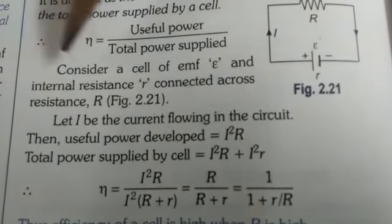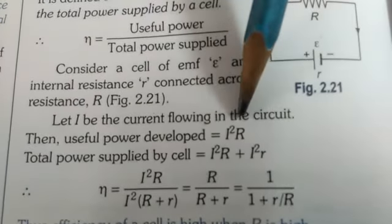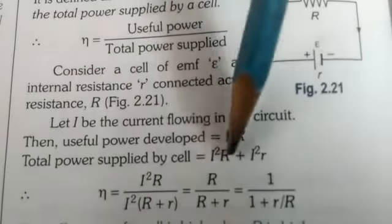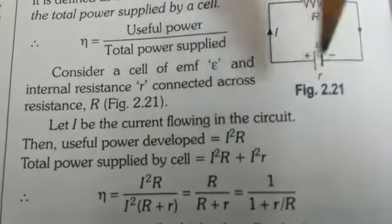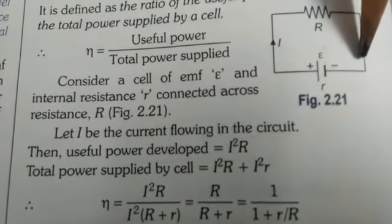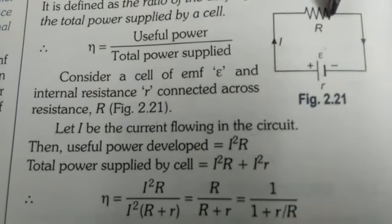EMF E and internal resistance r is connected to external resistance R and the current I is flowing through the circuit. So, the useful power is I square R, this we have already derived in previous lecture, and total power supplied is I square R plus I square small r. Who is supplying the power? The whole circuit is supplying the power. Who is using the power?